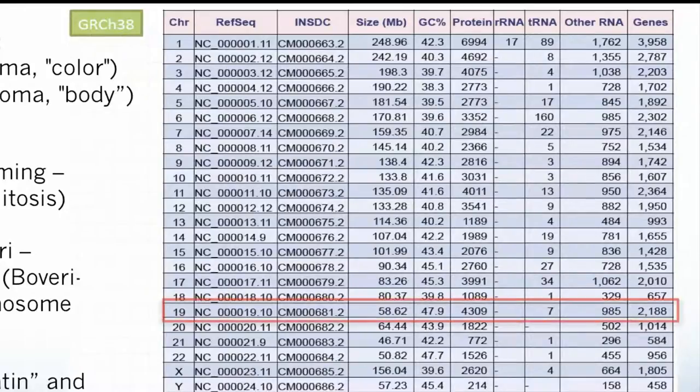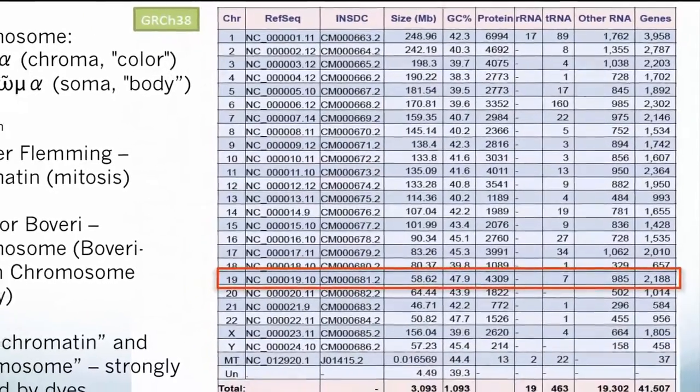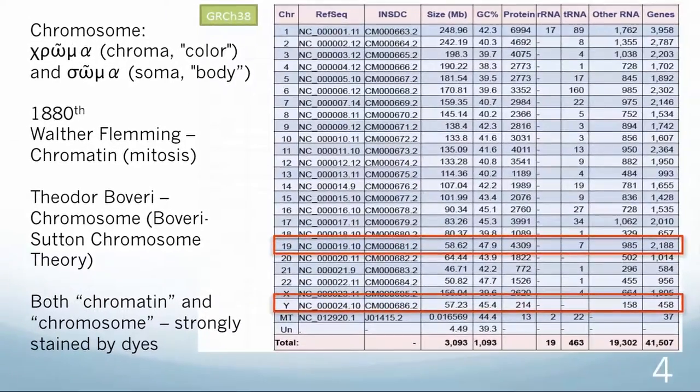For example, chromosome 19 has the highest, while chromosome Y has the lowest density of genes.